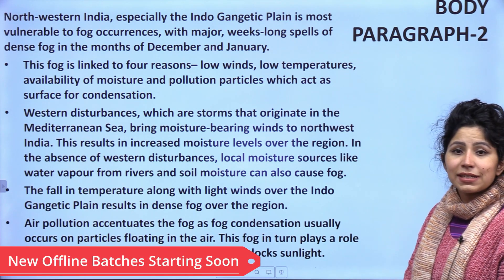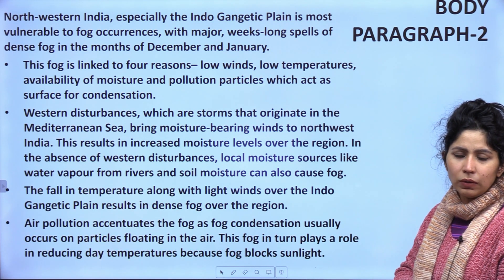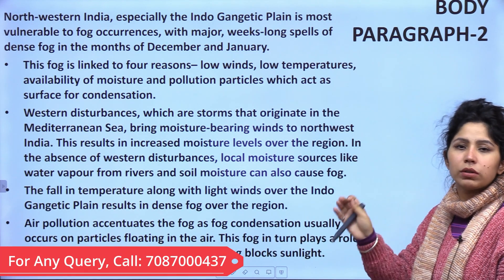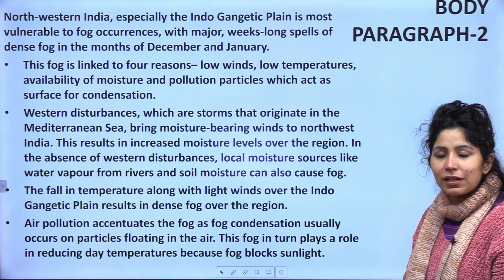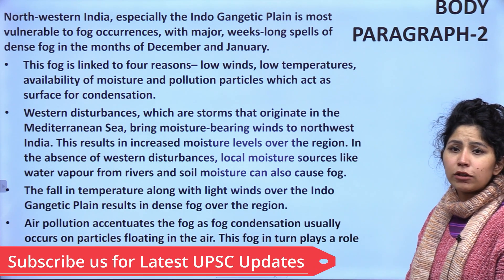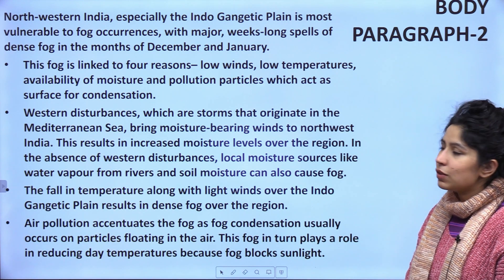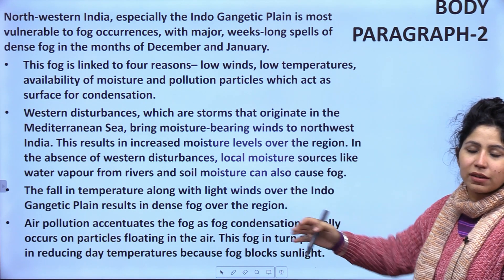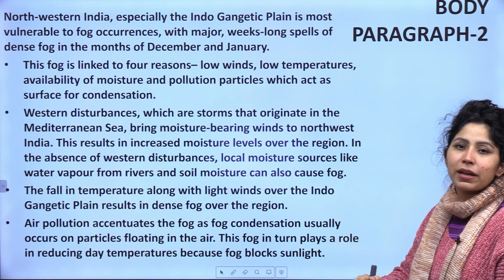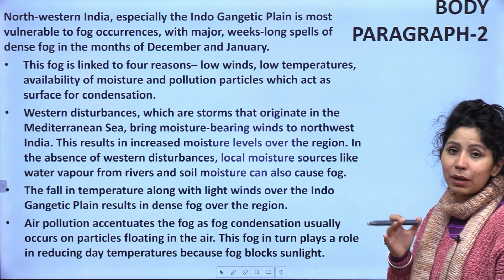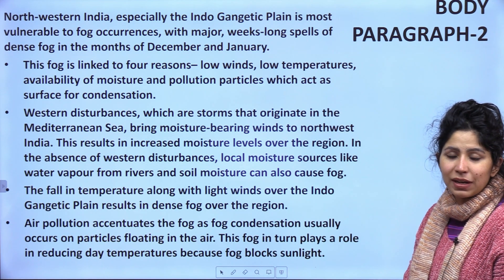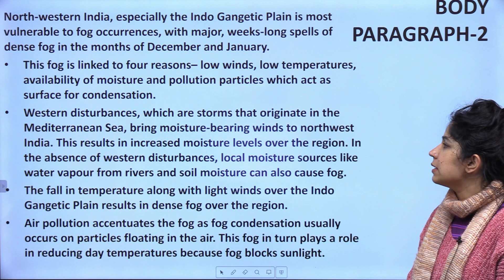Moving to the second part of the answer about fog over Northwestern India — in geography, talk about your seasons, climates, months and timelines. Northwestern India, especially the Indo-Gangetic plains, is most vulnerable to fog occurrences, with major week-long spells of dense fog in the months of December and January. This fog is linked to four reasons. You can write this part in a body paragraph approach, or use bullet points because these are not separate standalone factors. The four reasons are: low winds, low temperatures, availability of moisture, and pollution particles which act as surfaces for condensation.